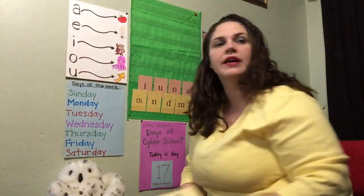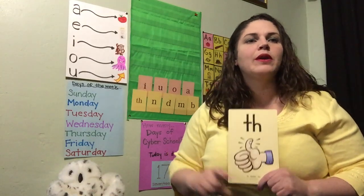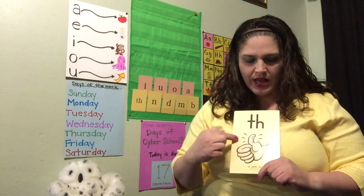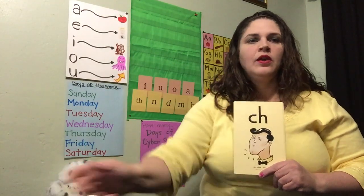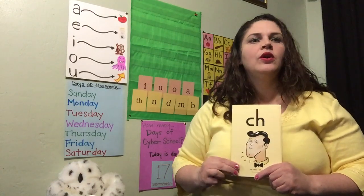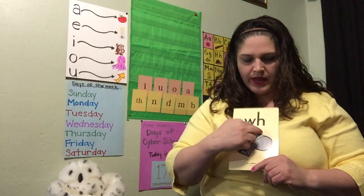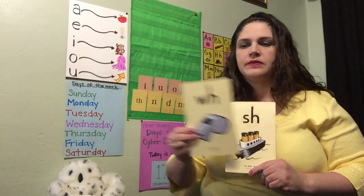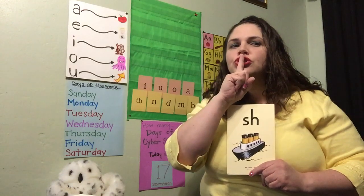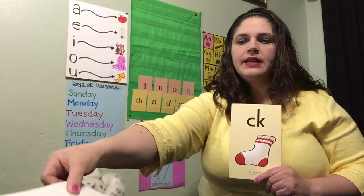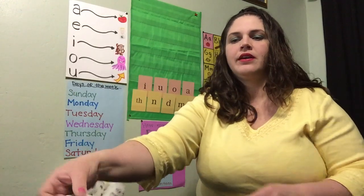We are talking about digraphs this week. That's two letters together to make one sound. We put T and H together, we get the sound TH. We put C and H together, we get the sound CH. W and H together, we get the sound W. S and H together, we get the sound SH. C and K together, we get the sound K. Nice job.